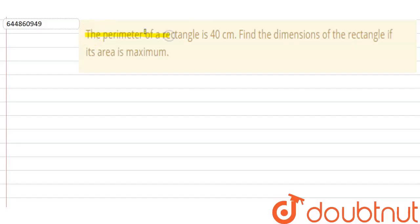The perimeter of a rectangle is 40 centimeters. Find the dimension of the rectangle if its area is maximum. Now, if I assume that the length and breadth